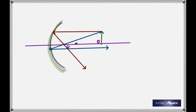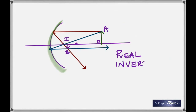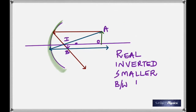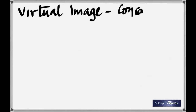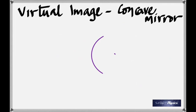Depending on the position of the object, the image is going to change. Let's look at all four properties. The image is real — it's inverted. On the exam, you will at least be asked to draw two figures. Now I want to show you how a virtual image is formed by a concave mirror. A concave mirror can produce both real and virtual images.